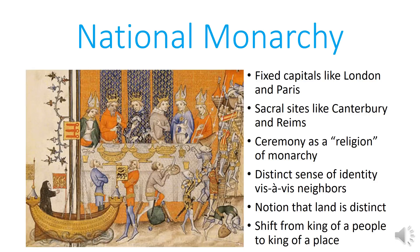Previously we've looked at other types of states which emerged in the Middle Ages: the Republican city-states of Italy, the Byzantine Empire, the Ottoman Empire, the Kievan Rus, and the Tsardom of Russia. Now let's look at the national monarchies of Western Europe, namely England and France. Castile also counts as a national monarchy, but I decided not to cover that in the same kind of detail.